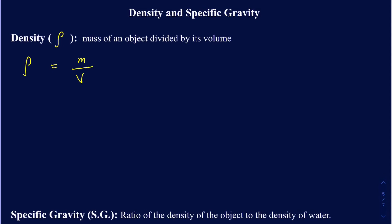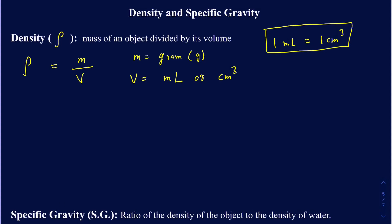What units are used for mass and volume? In a chemistry course, mass is measured in grams (lowercase g) and volume is measured in milliliters (mL) or centimeters cubed (cm³). One milliliter by definition equals one centimeter cubed — that's an important equality. So the units for density are grams over milliliters, or grams over centimeters cubed.